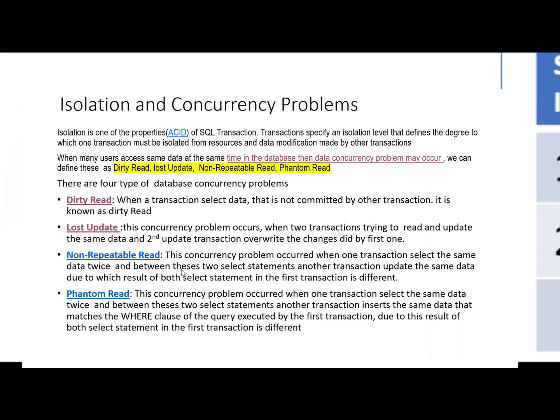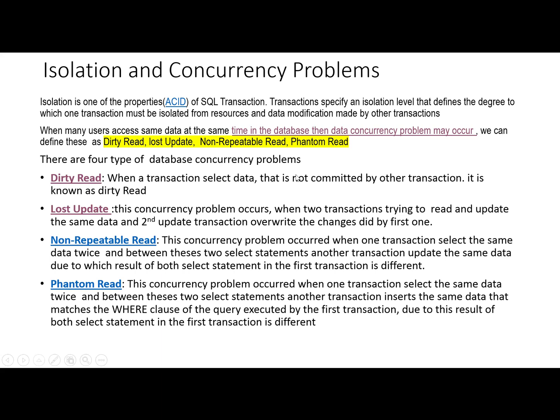There are four kinds of concurrency problems that may occur: dirty read, lost update, non-repeatable read, and phantom read.